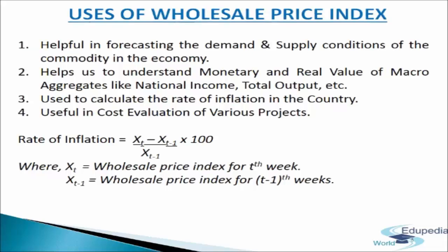WPI helps find out the rate of inflation in the country. The weekly inflation rate is given by: Weekly rate of inflation = (X_T − X_(T−1)) / X_(T−1) × 100, where X_T is the Wholesale Price Index for week T, and X_(T−1) is the Wholesale Price Index for week T−1. The yearly inflation rate is given by: Yearly rate of inflation = (WPI of current year / WPI of previous year) × 100.